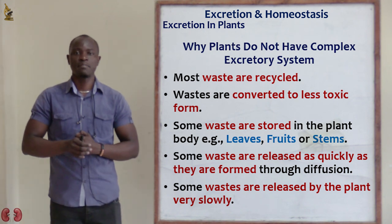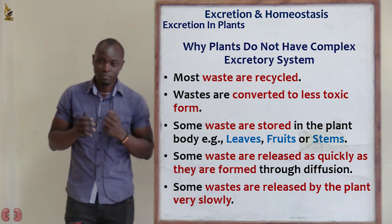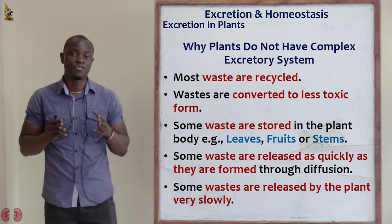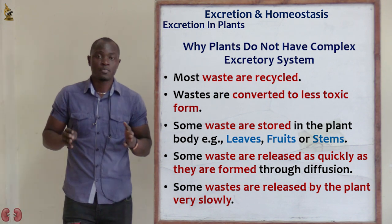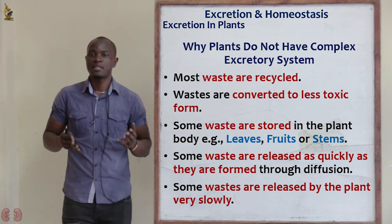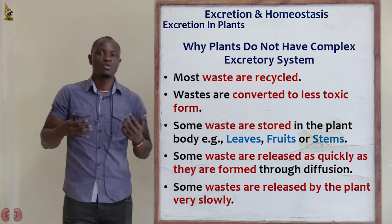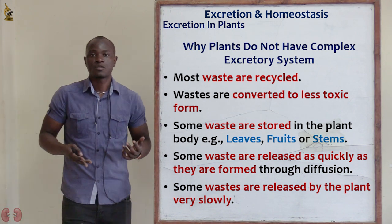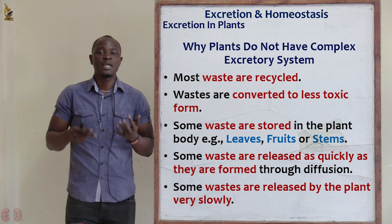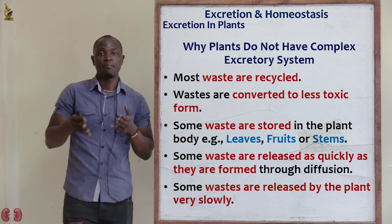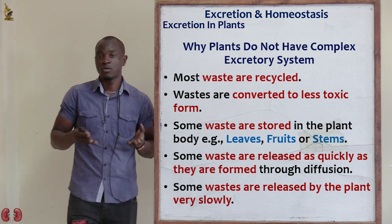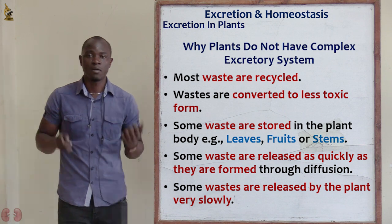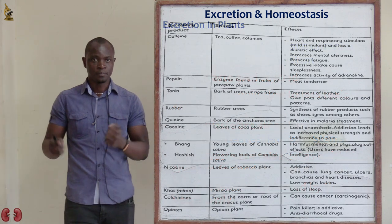Another reason is that waste products in plants are released very slowly. The rate at which waste products are released is not rapid, so they are released very slowly. This is also a reason why plants do not need a complex excretory system.